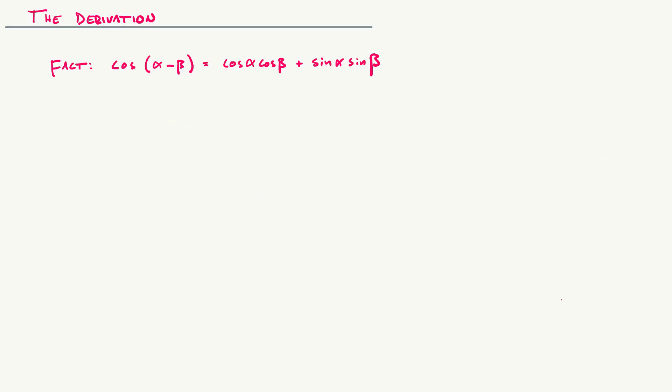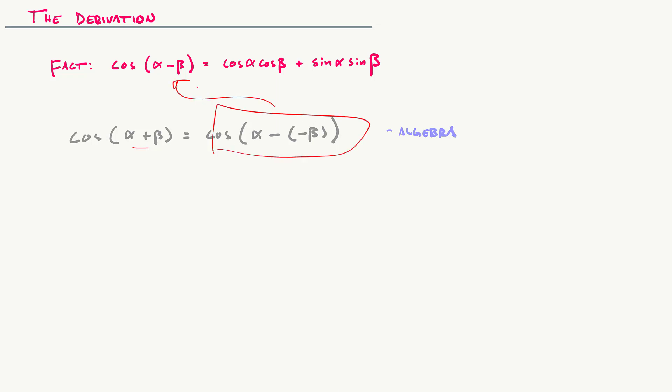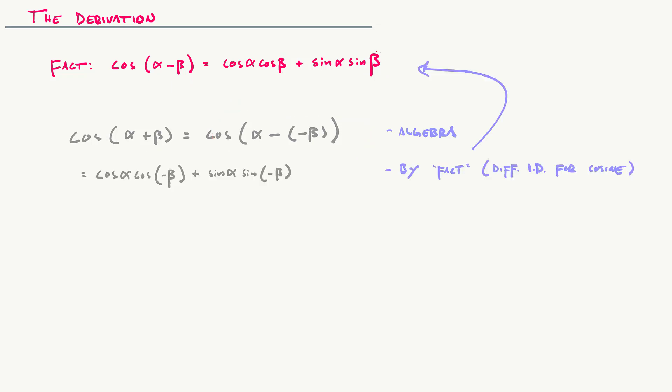Now let's do the sum identity. We don't have to set up everything again because cosine of alpha plus beta can be rewritten as cosine of alpha minus (negative beta) — subtracting a negative is adding. Using the difference identity with negative beta substituted in, we get cosine alpha times cosine(negative beta) plus sine alpha times sine(negative beta). Cosine is an even function, so cosine(negative beta) equals cosine beta. This is the negative angle identity.